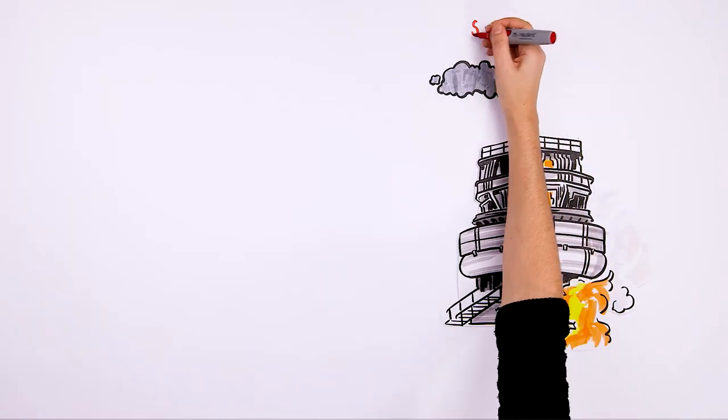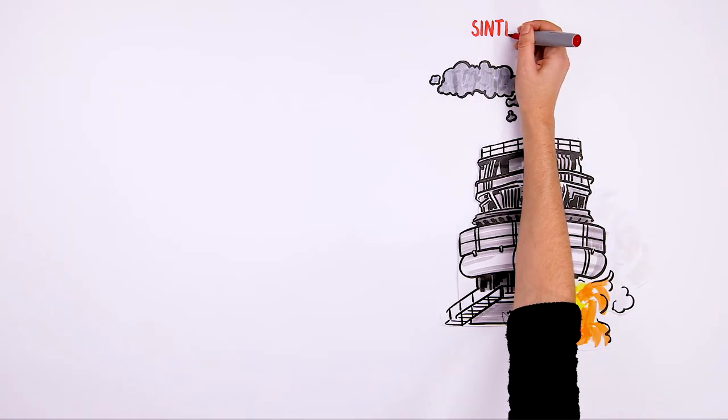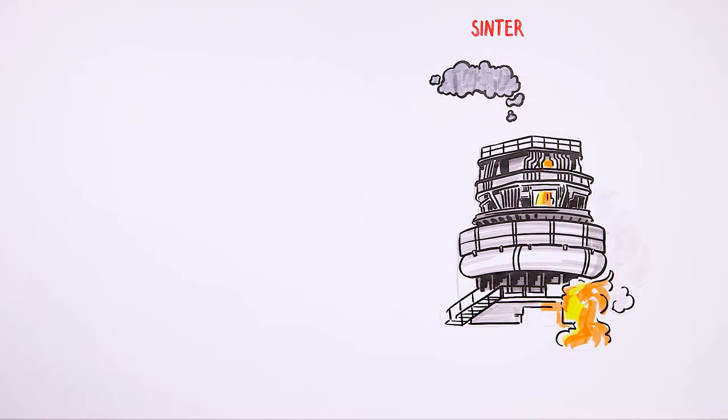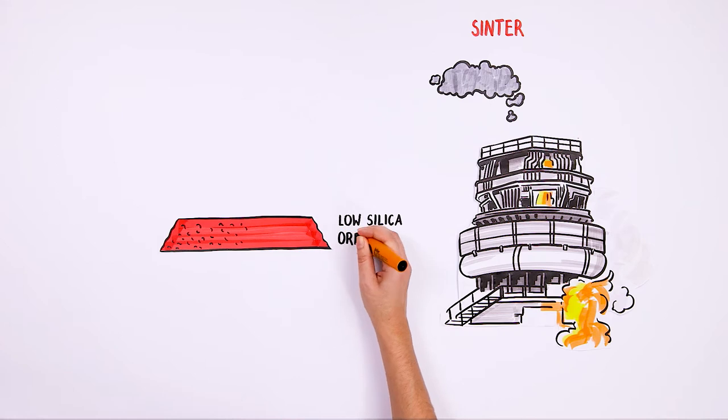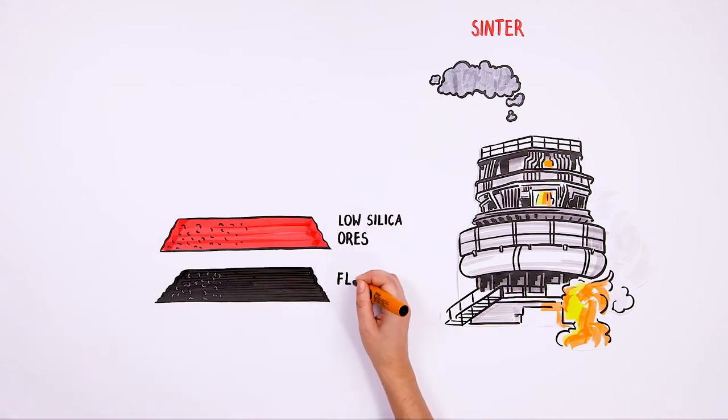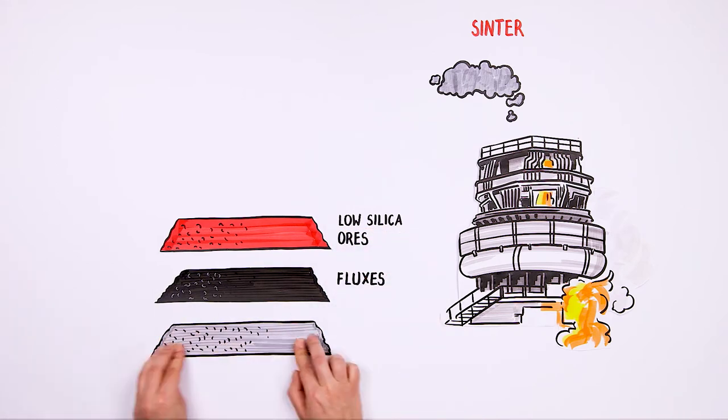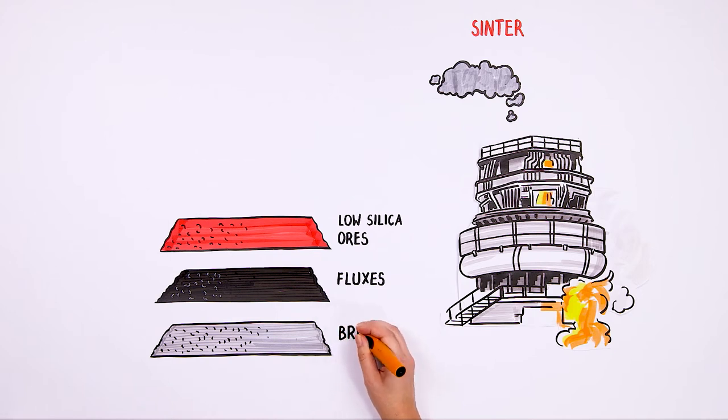How is the best steel made? The first stage is the production of pig iron in a blast furnace. The input material is sinter, i.e. iron ore, to which, among other things, low silica ores, fluxes, pollution removing substances, and a special type of coke referred to as breeze are added.